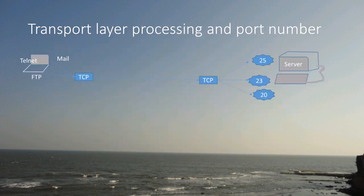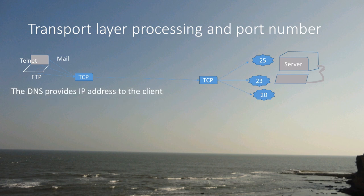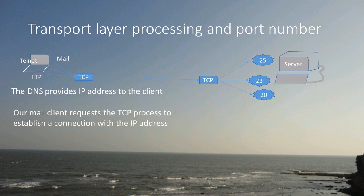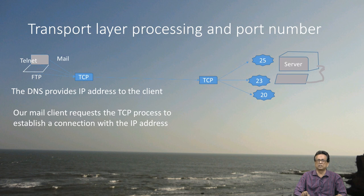The first thing is transport layer processing. DNS provides the IP address to the client — in this case, the IP address of glsuniversity.ac.in. Our mail client requests the TCP process to establish a connection with that IP address. You can see the sender's TCP and receiver's TCP, and the connection is established once that is done.